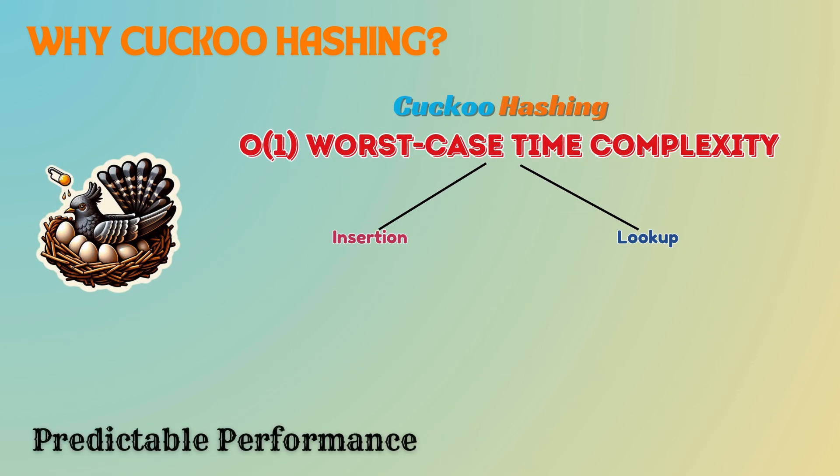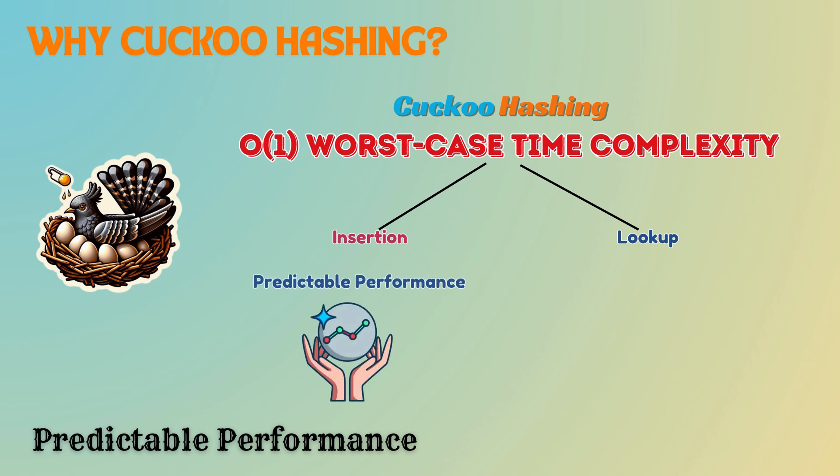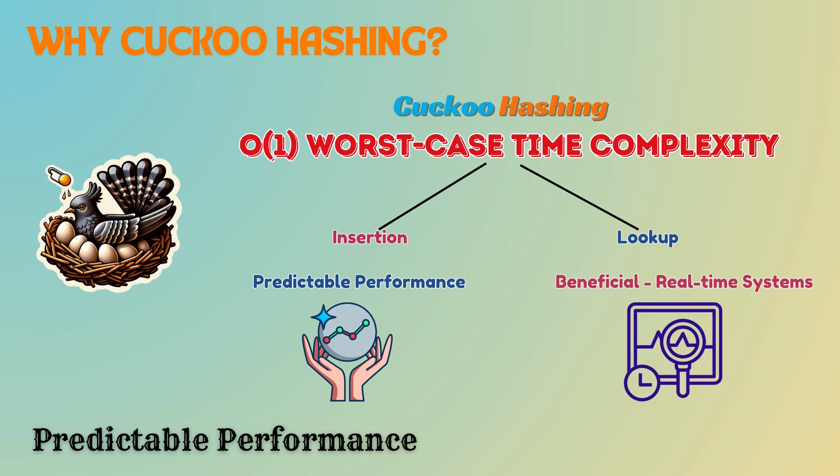Since cuckoo hashing guarantees worst-case O(1) operations, it provides more predictable performance, which is particularly beneficial in real-time systems. Cuckoo hashing ensures constant time operations for lookups and insertions, making it a highly effective choice for systems where predictable worst-case performance is crucial.